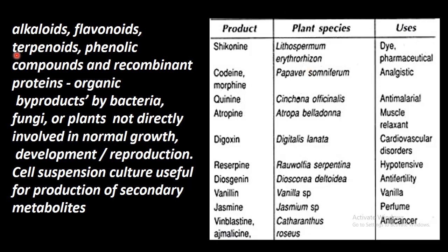Secondary metabolites include alkaloids, flavonoids, terpenoids, phenolic compounds, and recombinant proteins. These are all organic by-products produced by bacteria, fungi, or plants.